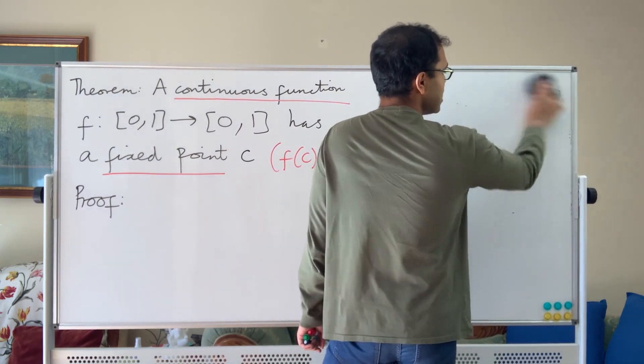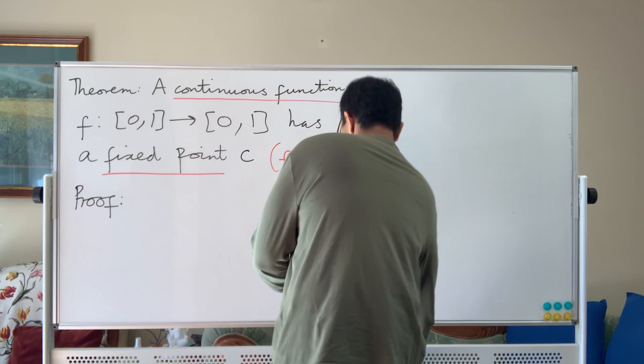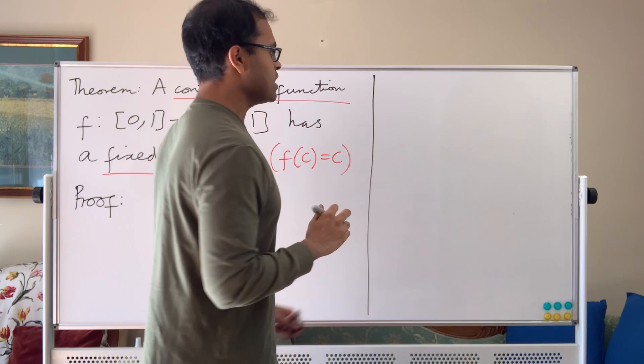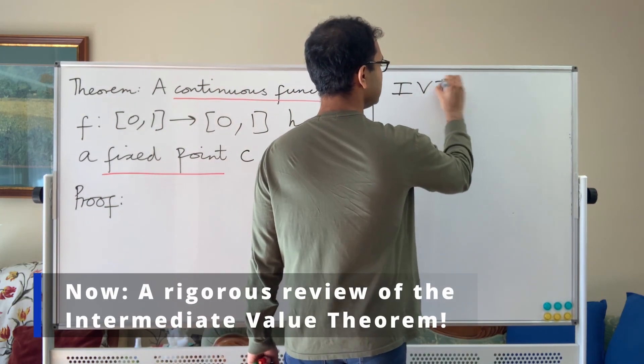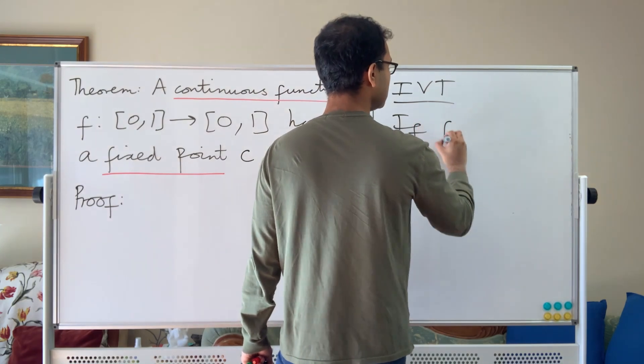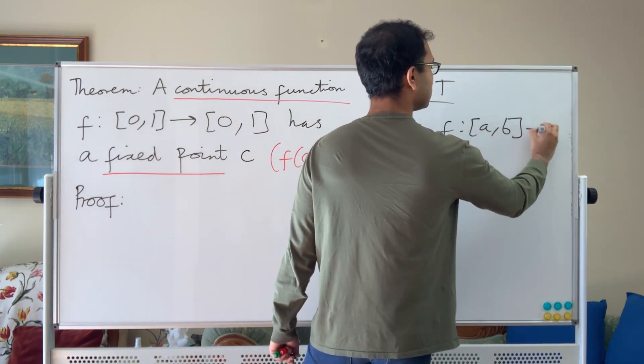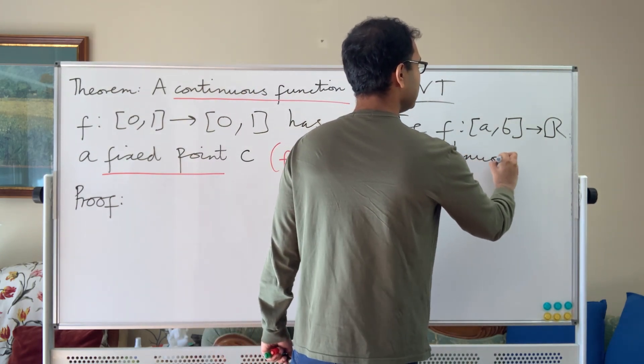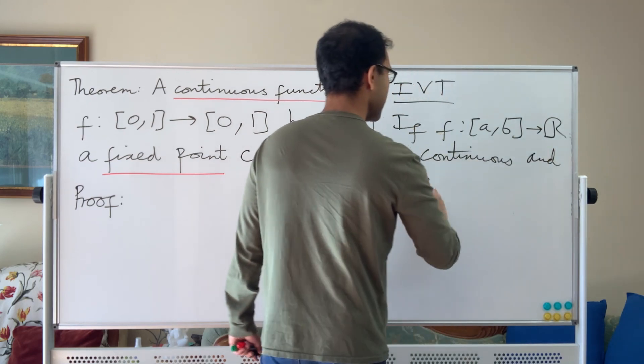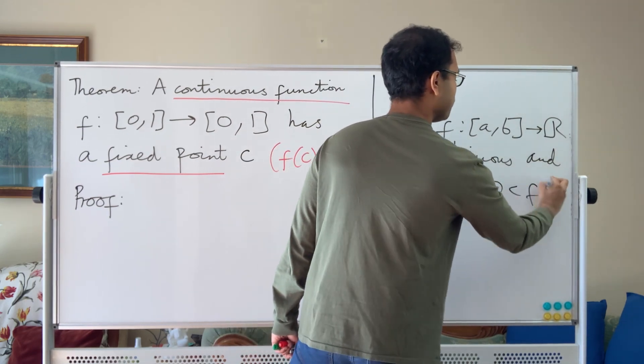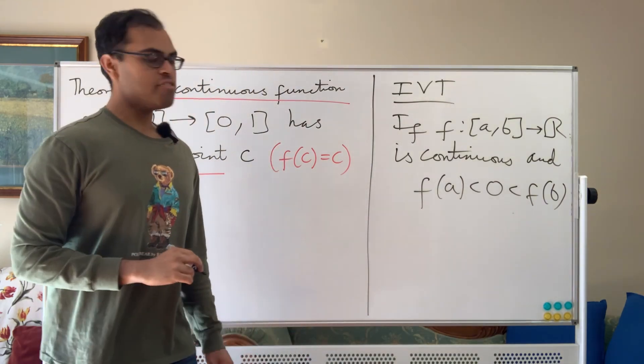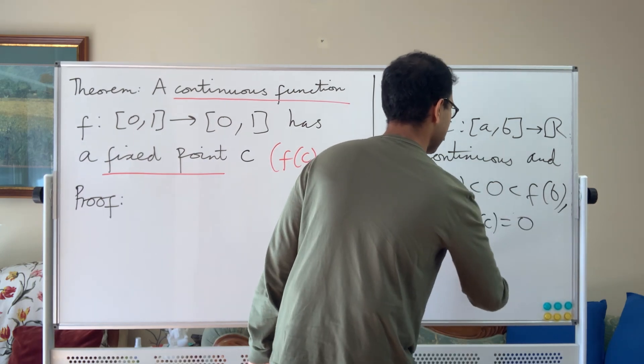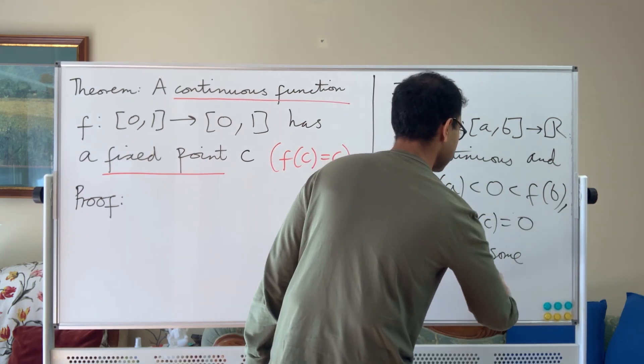We're going to briefly review the intermediate value theorem. This is the intermediate value theorem, IVT. If f from [a,b] to R is a continuous real valued function, and f(a) is less than 0 is less than f(b), so f(a) is negative and f(b) is positive, then f(c) equals 0 for some c inside the interval [a,b].